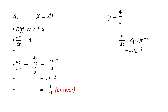Now question number 4: x equals 4t and y equals 4 upon t. Differentiating with respect to x — dx by dt is 4, very simple. dy by dt: 4 upon t can be written as 4t⁻¹, so the derivative is 4 × (−1) × t⁻² = −4t⁻². Substituting for dy by dx, we get −4t⁻² in the numerator divided by 4 in the denominator. 4 cancels, leaving −t⁻², which is −1 upon t². That is the answer to question 4.